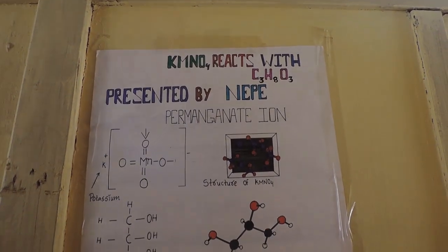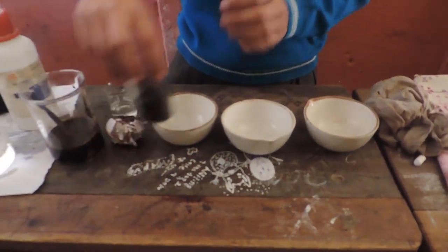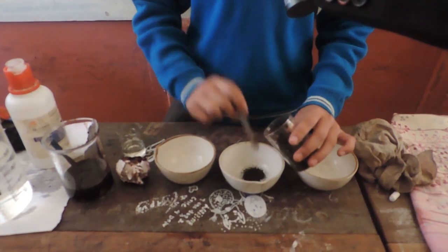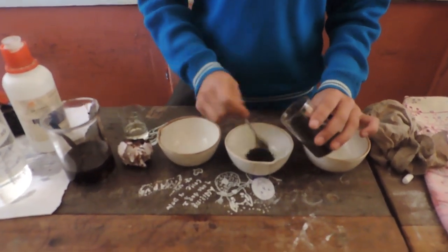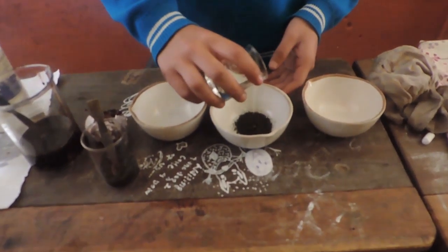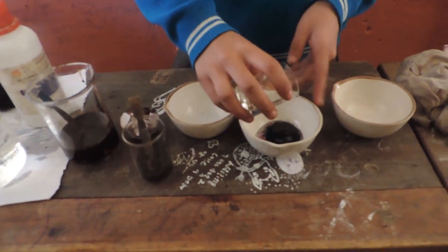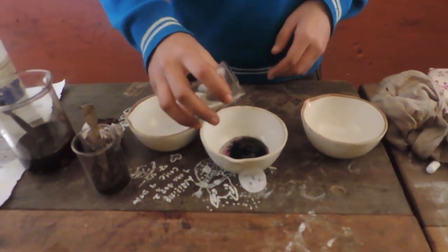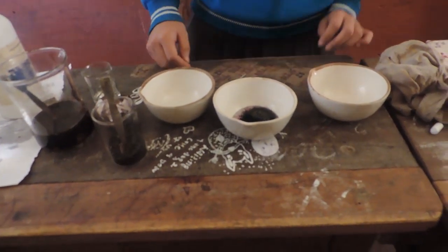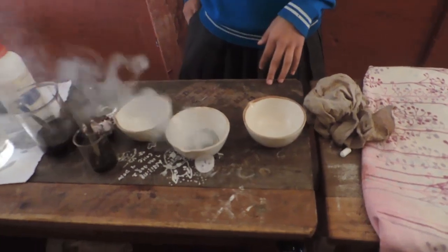We're going to demonstrate. As we all know, potassium is one of the most reactive metals. Now let me demonstrate about potassium. This is potassium salt and this is glycerol. We'll take seven spoons of potassium salt, then we'll mix it with this glycerol. The glycerol ignites and they will be on fire. So this is the reaction of potassium.